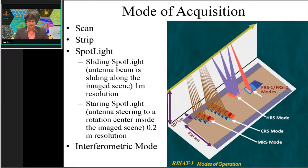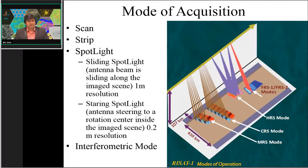Having seen different SAR systems and platforms, we now focus on the mode of acquisition of SAR data. There are three modes: ScanSAR mode, stripmap mode, and spotlight mode. Spotlight mode is further categorized into sliding spotlight and staring spotlight, a capability available only with TerraSAR-X. All other satellites provide only one spotlight mode, but TerraSAR-X can acquire in sliding and staring spotlight modes.